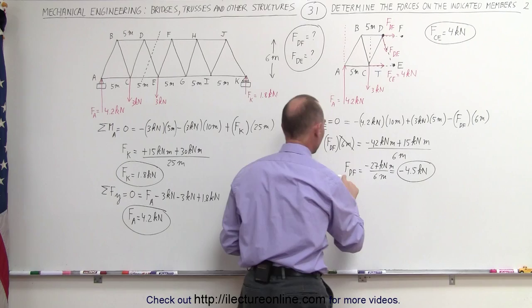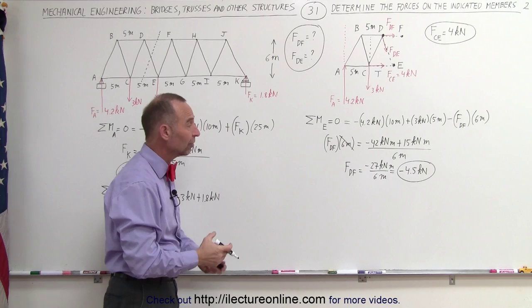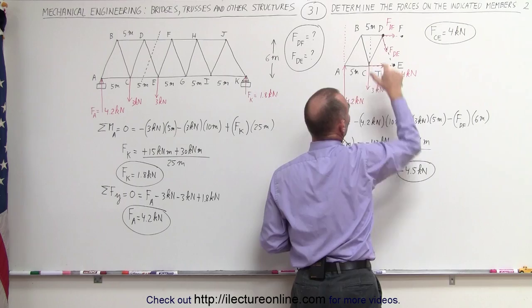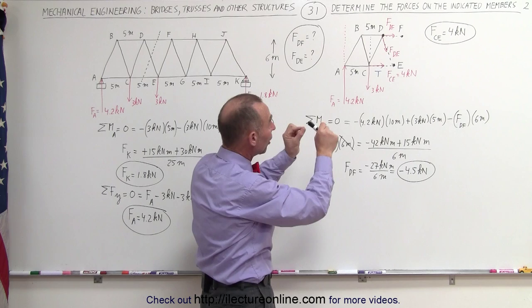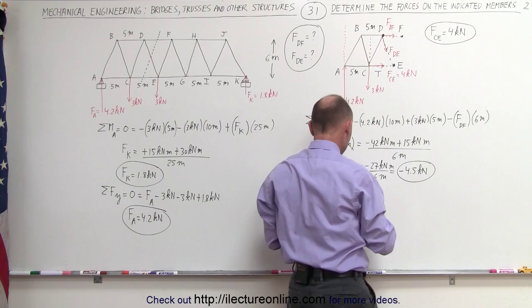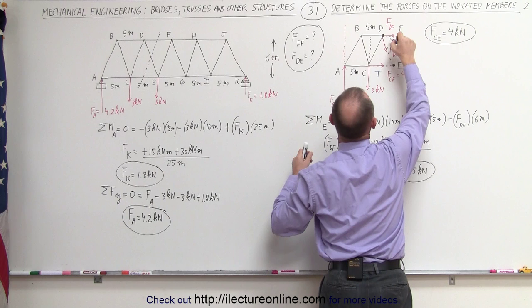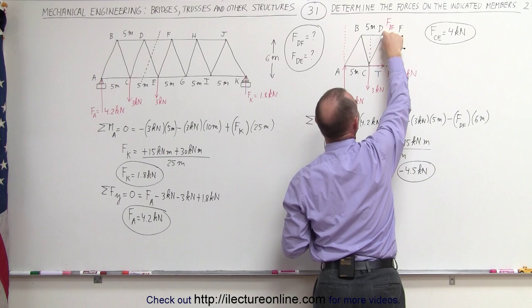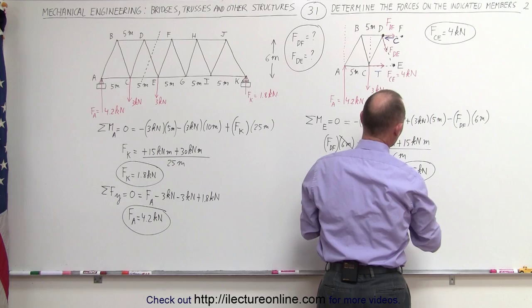The force between D and F is negative 4.5 kilonewtons. What does the minus indicate? I drew the arrow in this direction, which means I was assuming tension in that member. We always draw arrows away from the points at the end of the section. If we get a negative answer, that means the force is actually in the opposite direction — this is actually a compression situation. Member DF is under compression, with a magnitude of 4.5 kilonewtons.